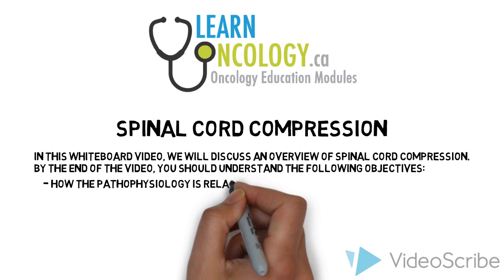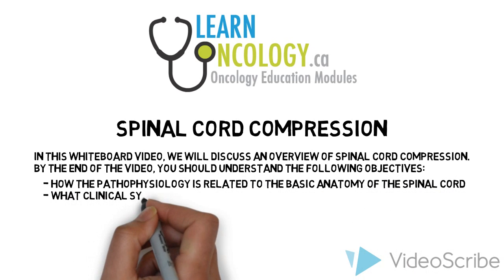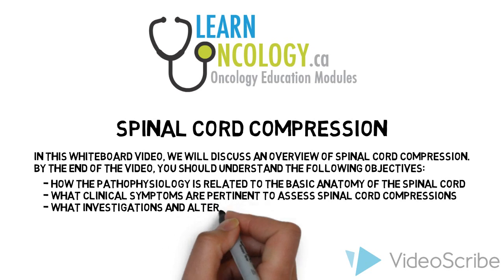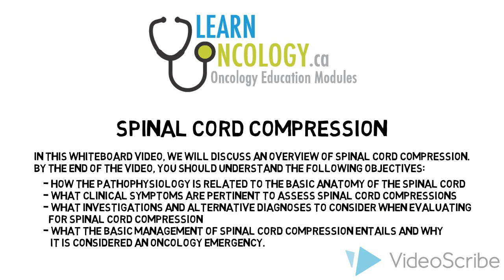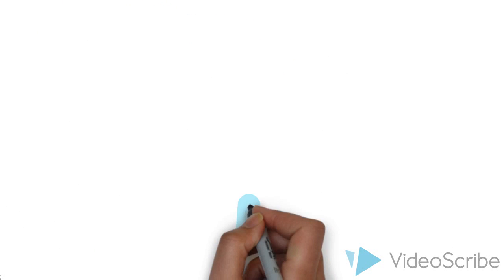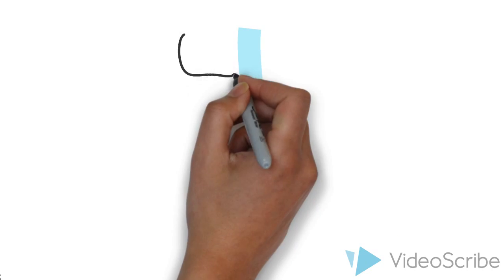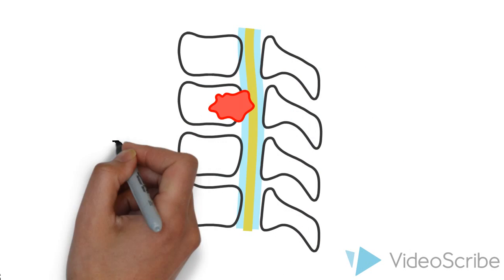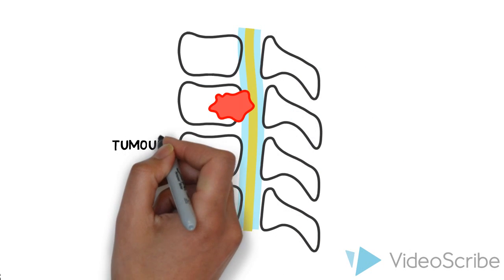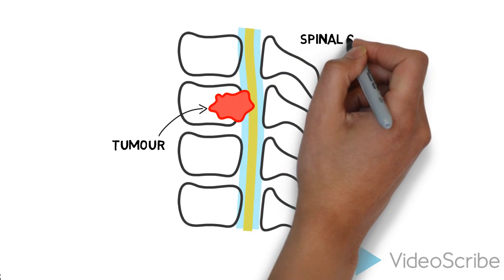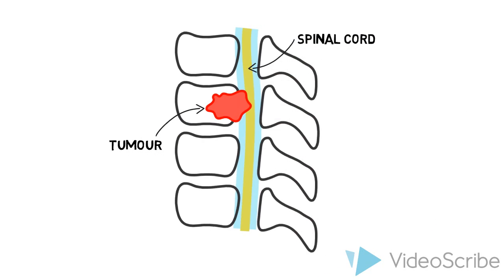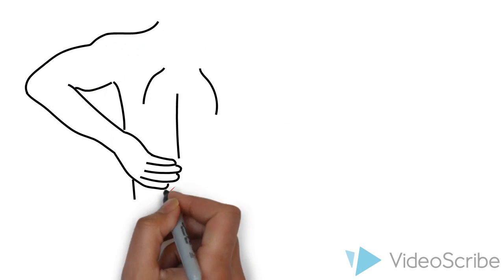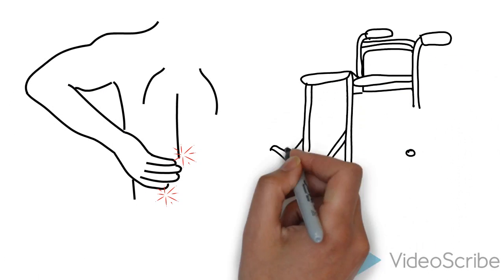By the end of the video, you should understand the following objectives. Pause the video now to review them. A spinal cord compression is an oncology emergency that happens when a tumor causes impingement of the spinal cord. This may be a primary or metastatic tumor nearby the cord. This leads to pain and potentially irreversible neurological dysfunction.